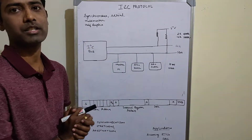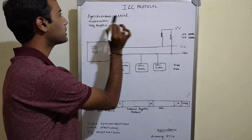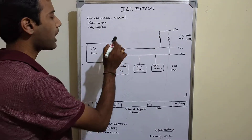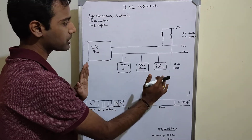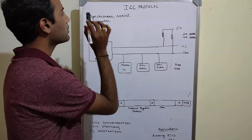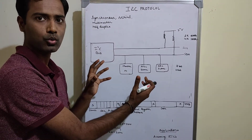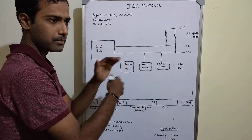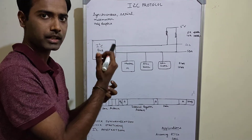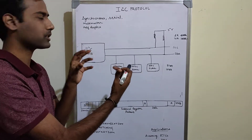So we will start with I2C protocol. I2C is a synchronous serial communication protocol. Synchronous means there should be synchronization between the sender and receiver — the sender sends data at a particular pace and the receiver should be able to receive at that same pace.